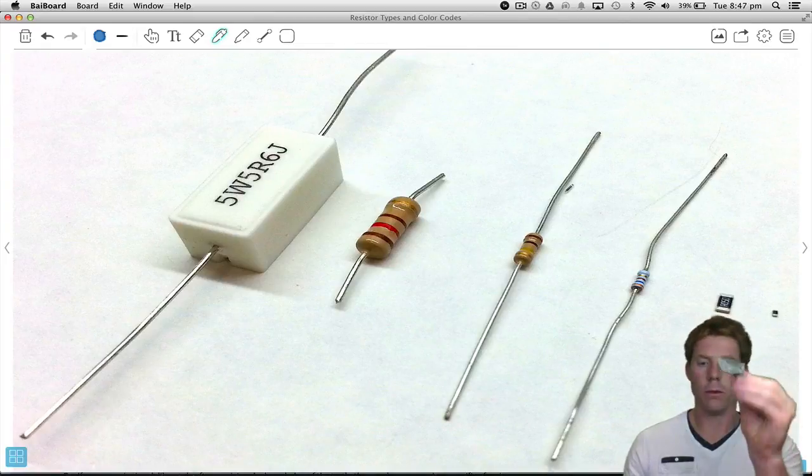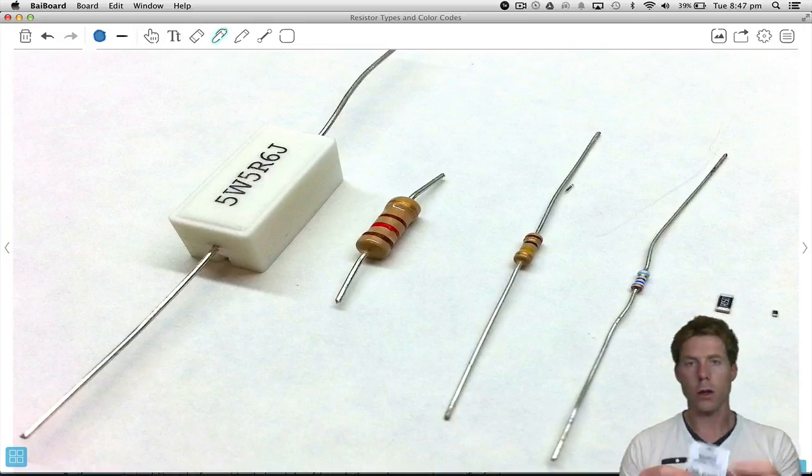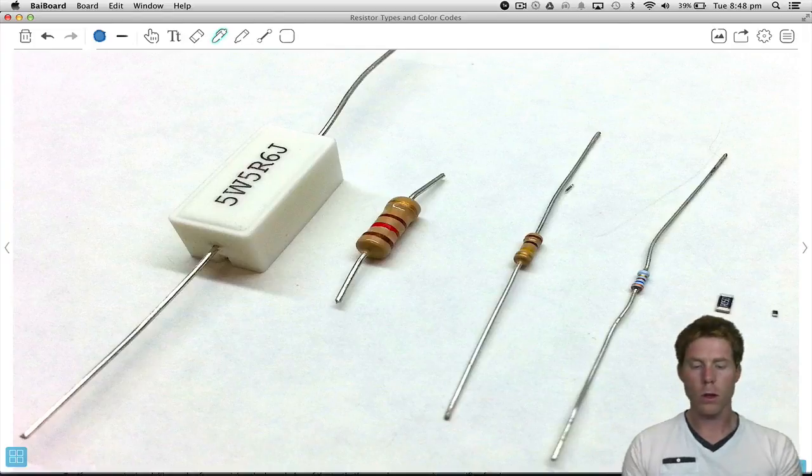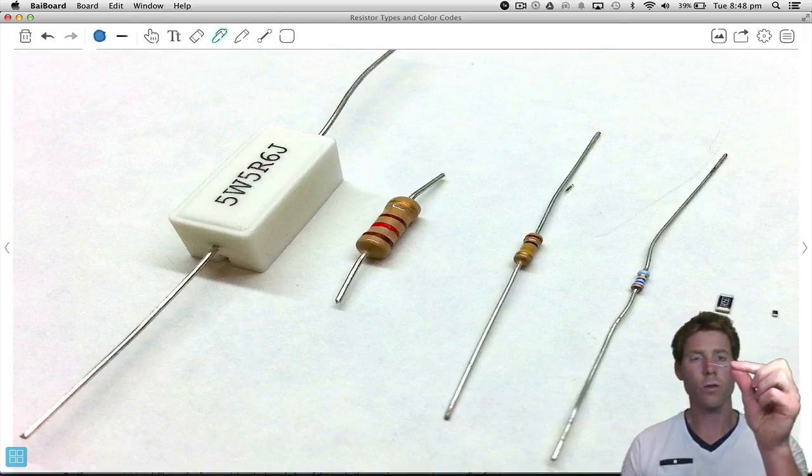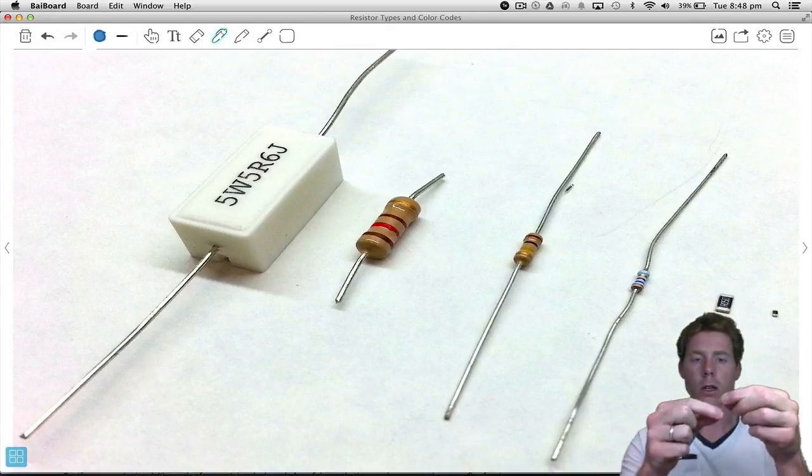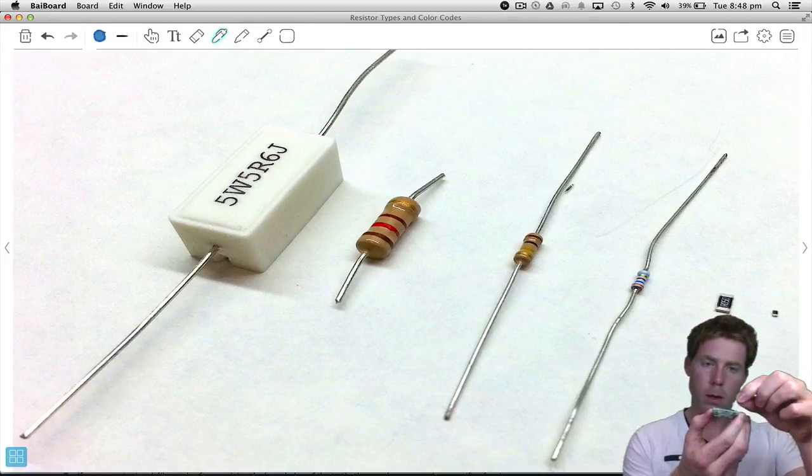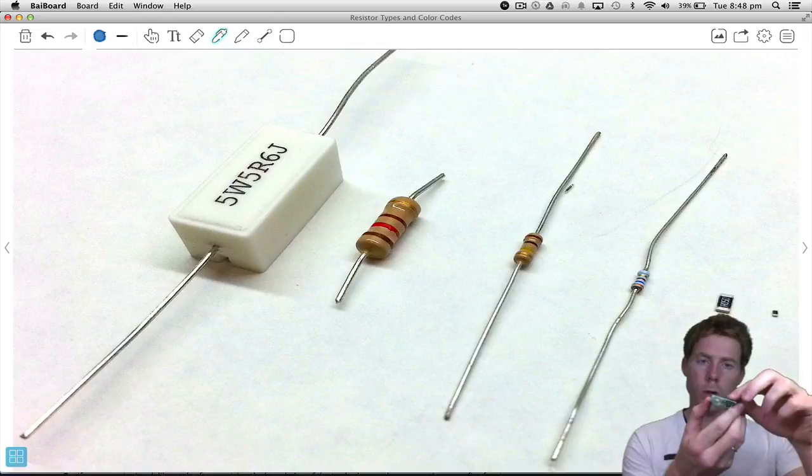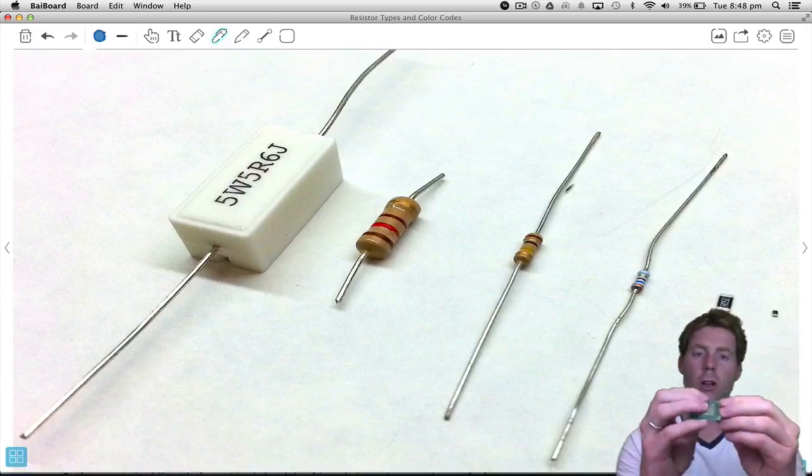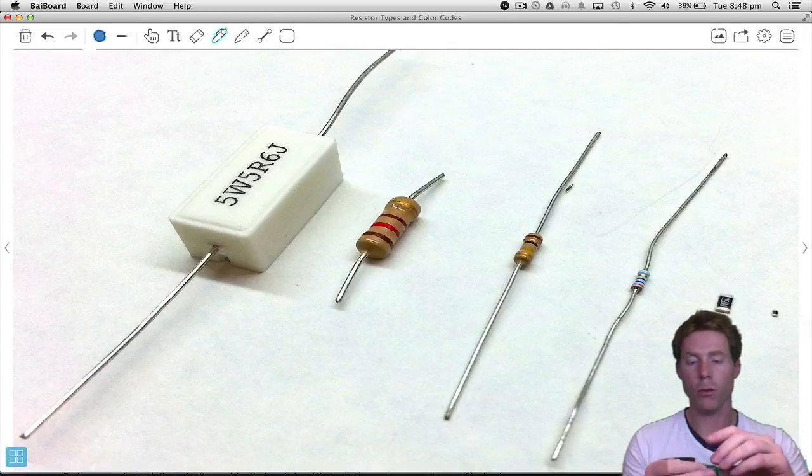If you compare that to one of these types of circuit boards, so here's some resistors here, what we have to do in this case is we have to physically form this. So we're going to have to bend the legs over. Once we've bent them, we get our circuit board, plug the resistor in to wherever it's going. So we put the resistor in, push it down, turn it over, cut the legs off, and actually solder it in there. So you can see it's quite a bit more of a process.